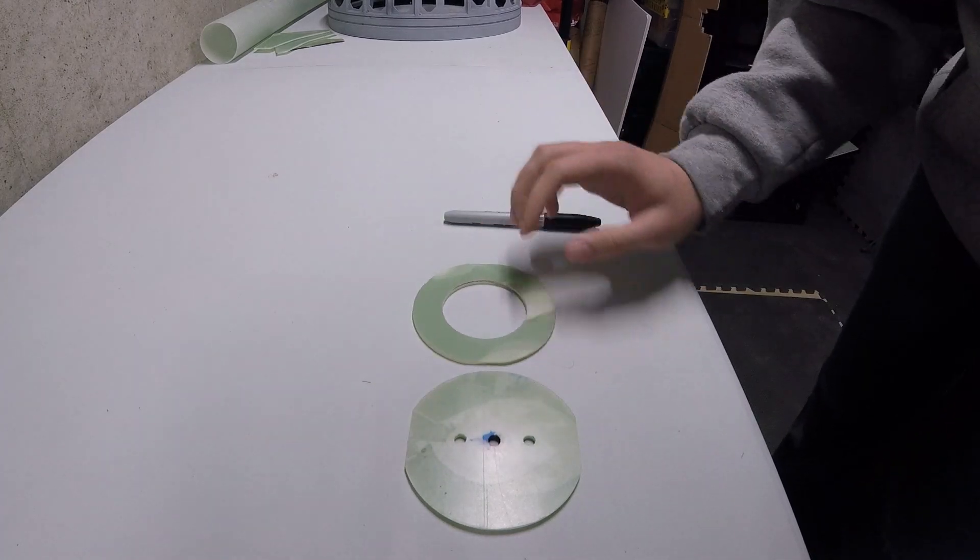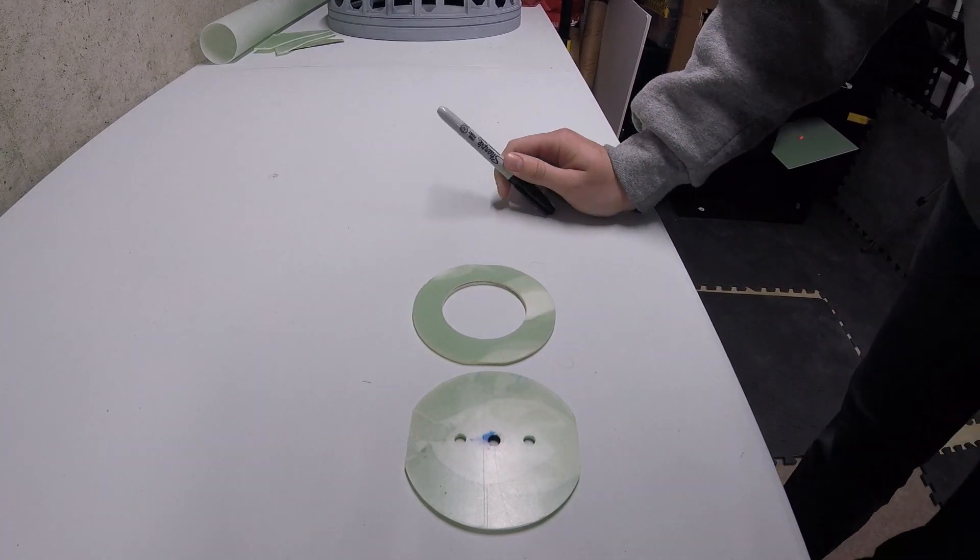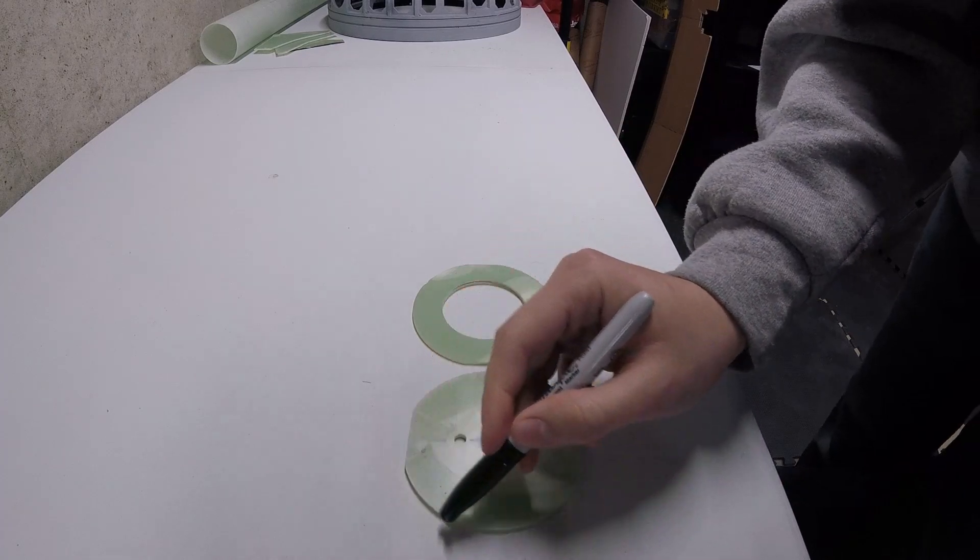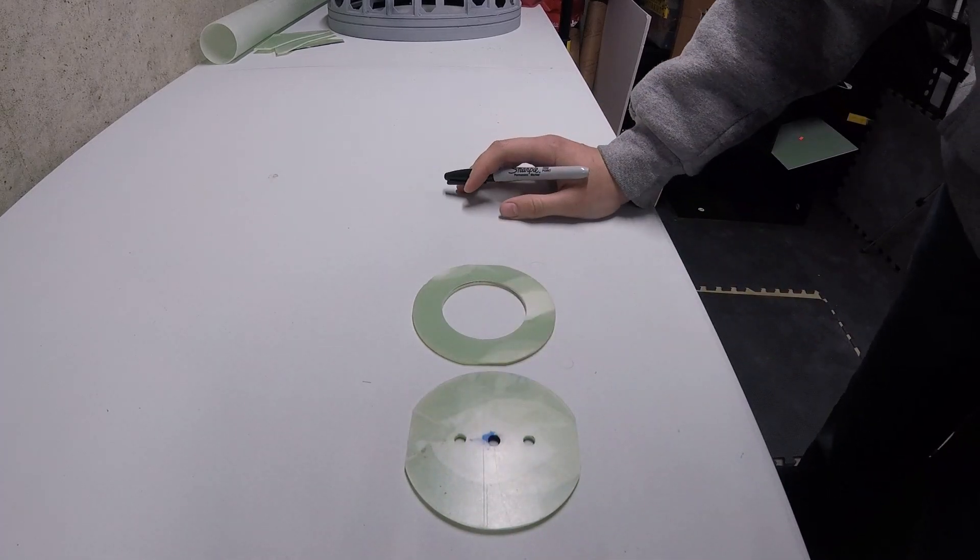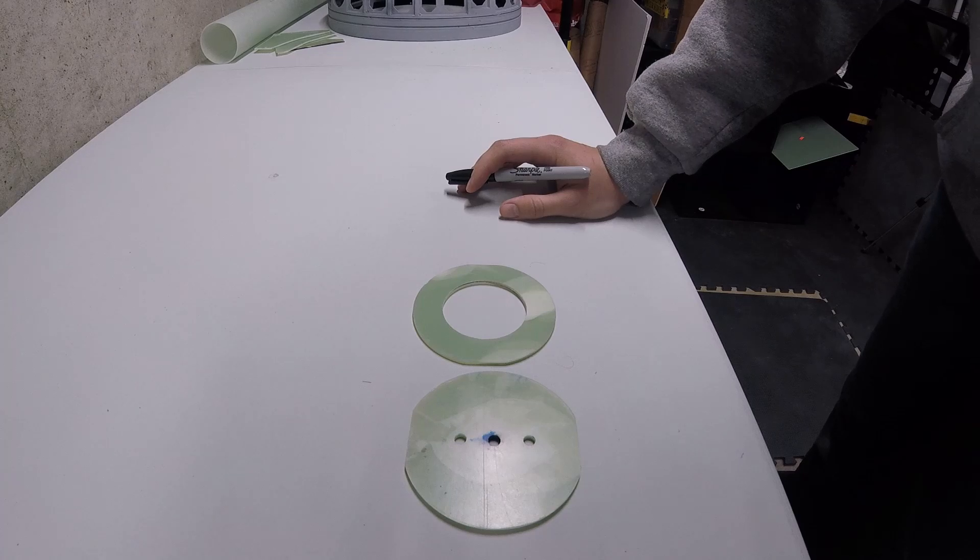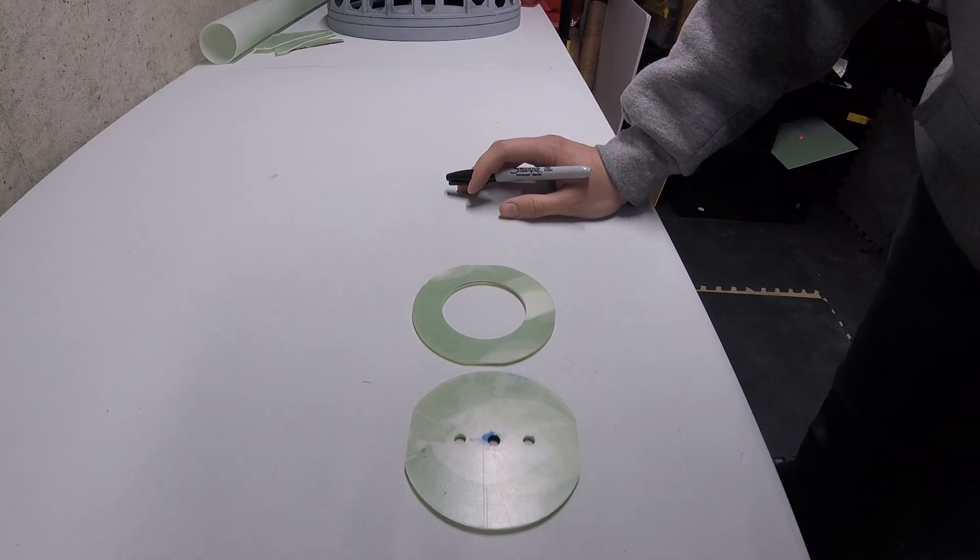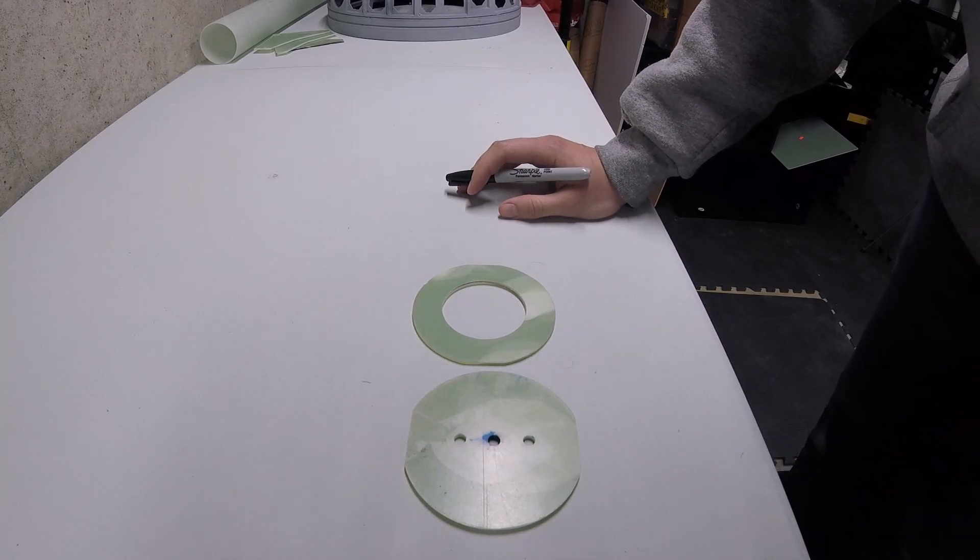Now finding a hole saw to cut the outside diameter is pretty much impossible. 75 millimeters, three inches. It's not an easy one to find, something that will slide perfectly inside your three inch tube with a hole saw.